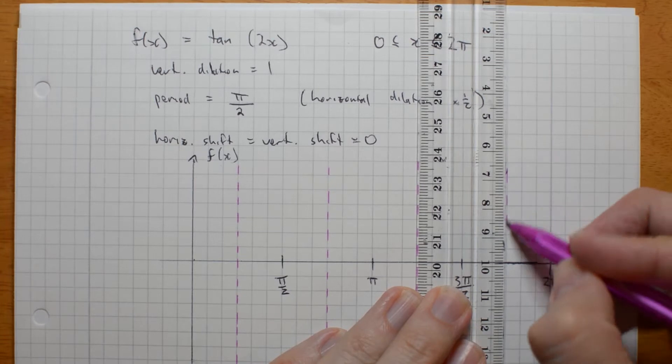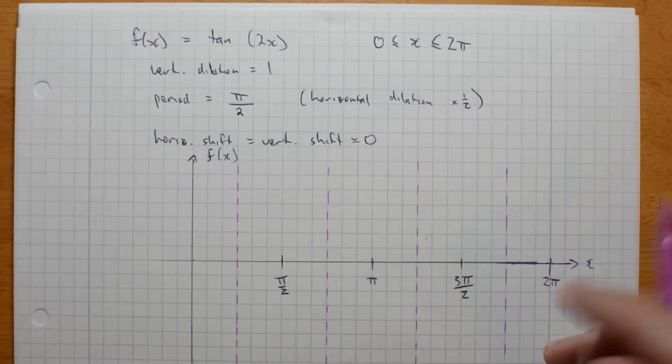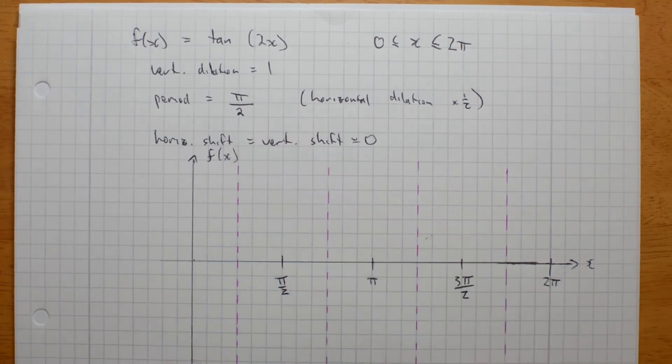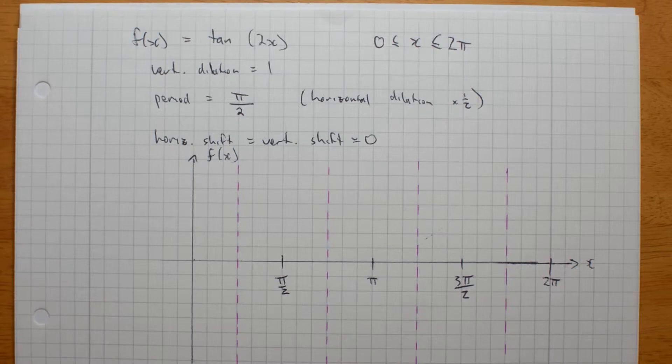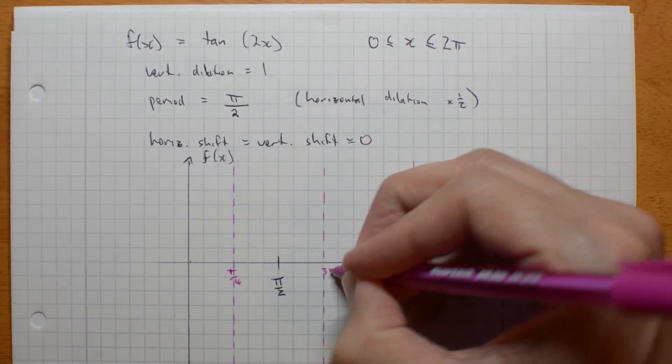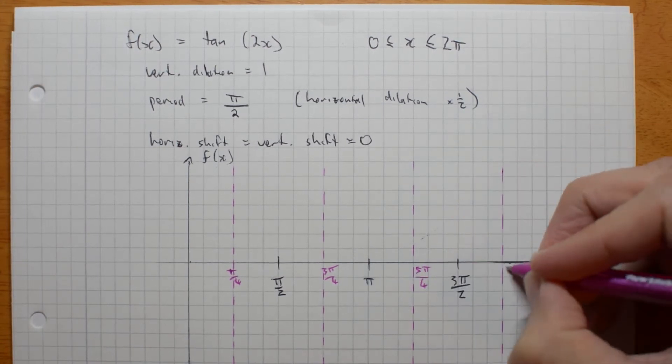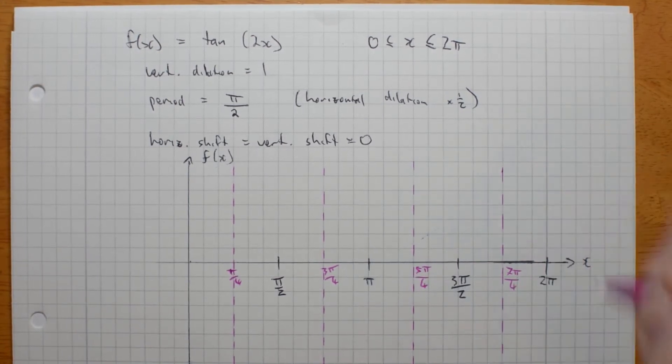So, instead of two asymptotes in this space, I've now got four, because I'm squashing it up. I've halved the period. To try to describe those, I've got pi on 4, and 3 pi on 4. Maybe I should write that. So, that's pi on 4. That's 3 pi on 4. That's going to be 5 pi on 4, and 7 pi on 4.